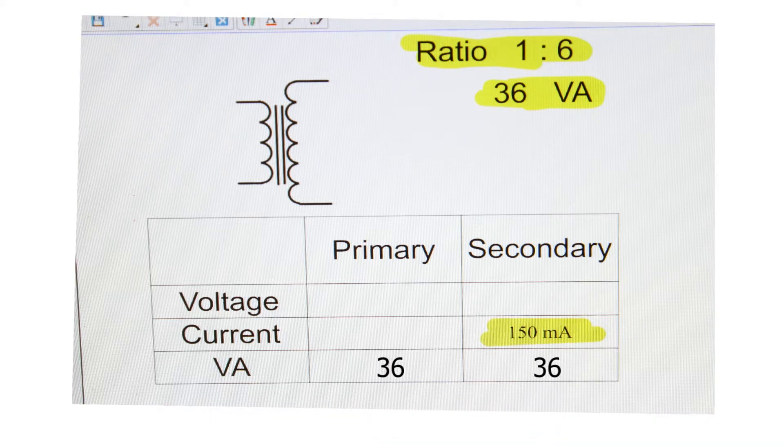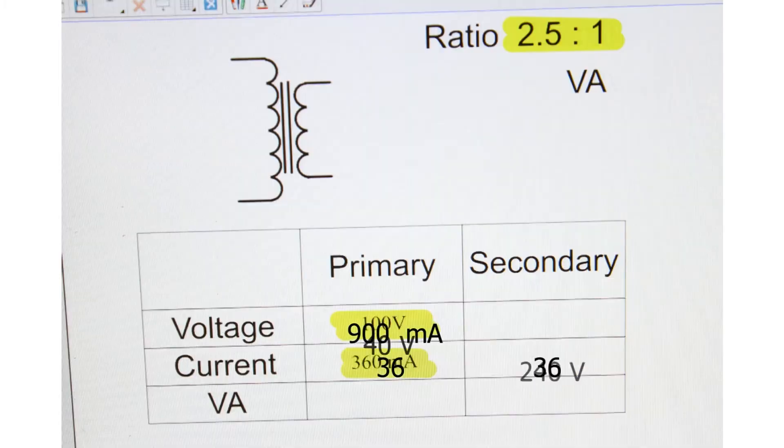36 volt amps was given. That's our secondary volt amps. Divide that by 150 milliamps and that gives you 240 volts. It's a 6 to 1 ratio, so divide by 6, that gives you 40 volts on the primary. 36 divided by 40 equals 900 milliamps for primary current.